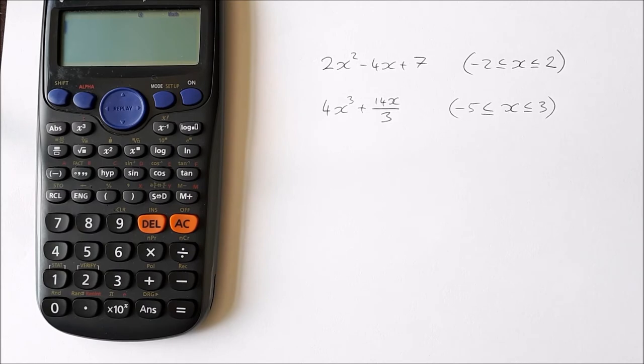Okay, so in this video I'm going to show you how to use the function mode on your calculator to create a number table using your Casio calculator. I have a couple of examples I'm going to show you. The first one is 2x² - 4x + 7, where x is greater than or equal to -2 but less than or equal to 2.